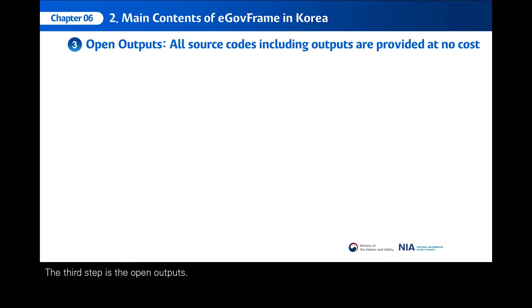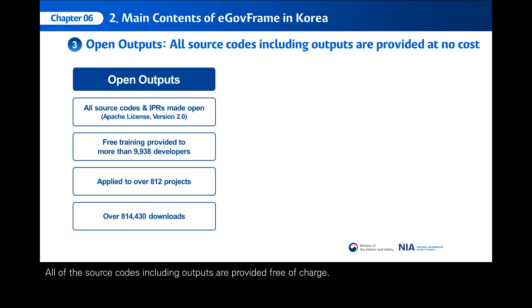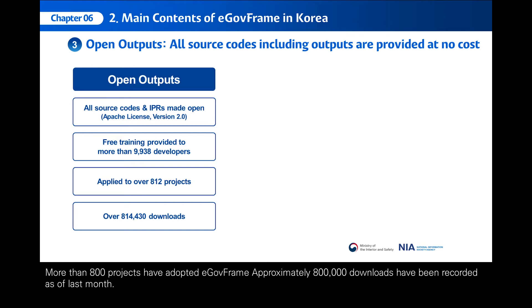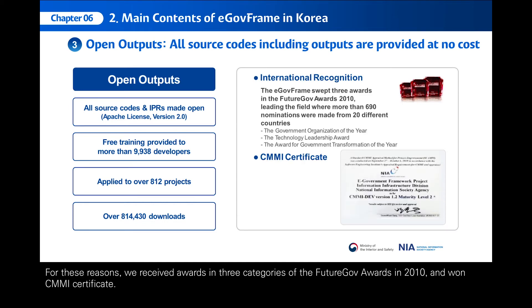The third step is the open outputs. All of the source codes, including outputs, are provided free of charge. You can download all of the source codes at the portal site, eng.egovframe.go.kr. Roughly 10,000 developers have been trained so far. More than 800 projects have adopted E-GovFrame. Approximately 800,000 downloads have been recorded as of last month. For these reasons, we received awards in three categories of the Future Gov Awards in 2010 and won the CMMI Certificate.